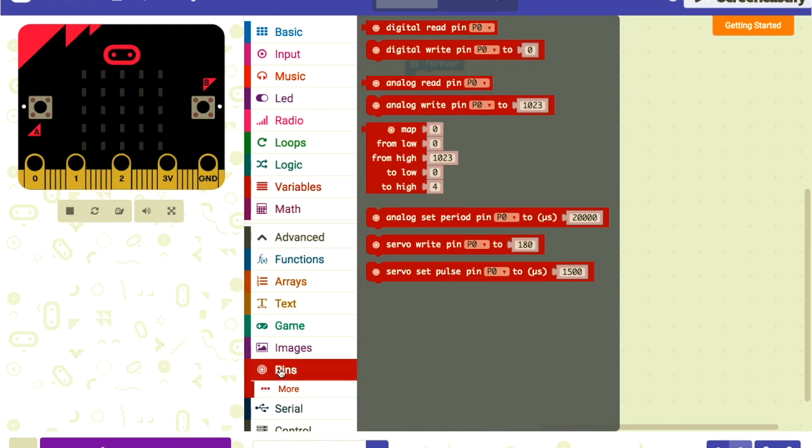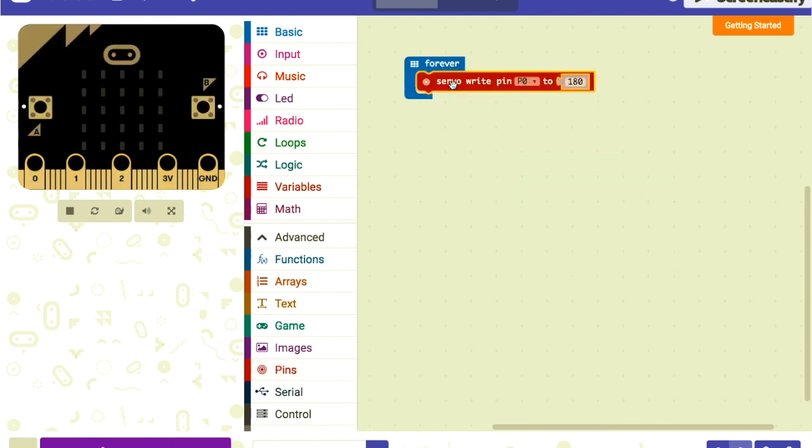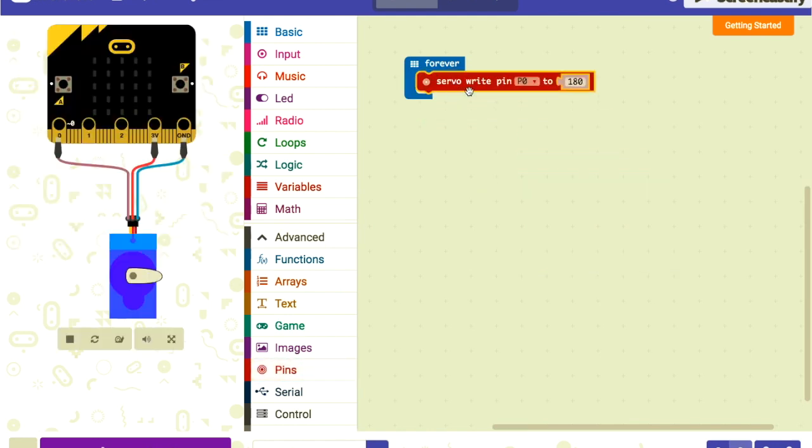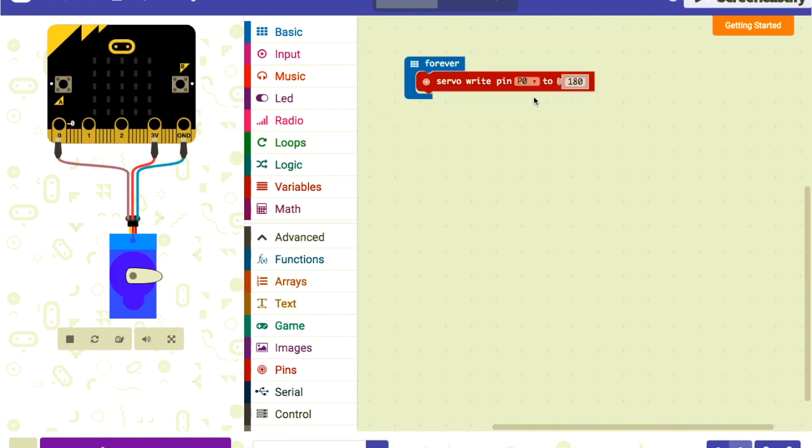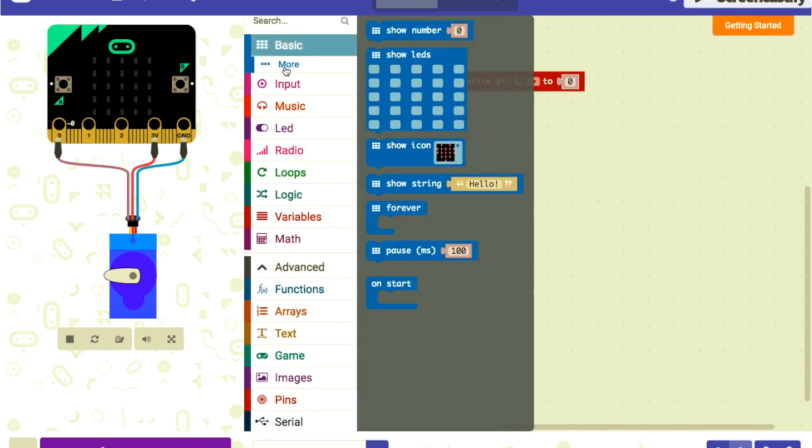First we're gonna go into basic and grab a forever loop. Then if we go to advanced, there's pins here so we can code the pins on the micro:bit. There's this servo right pin zero, so we'll grab that and put it in the loop. Pin zero is the one we hooked the servo motor up to. We're gonna set pin zero to zero degrees, then we're gonna wait.